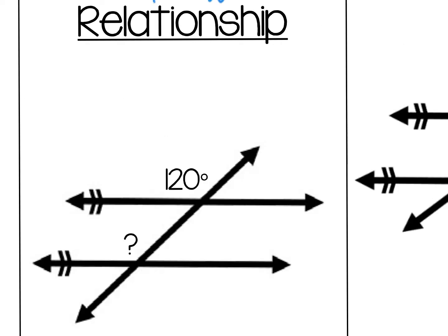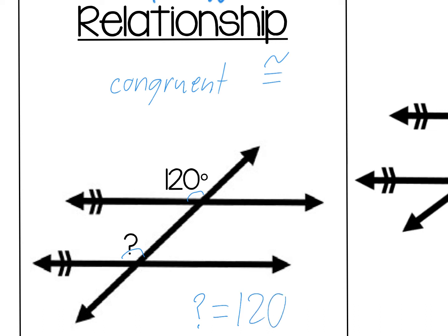Now let's look at an example of two corresponding angles. In this case, 120 degrees and the mystery angle are corresponding — they're in the same position on different lines. Corresponding angles are always congruent, meaning they have the same angle measure. So the mystery angle must be 120 degrees.